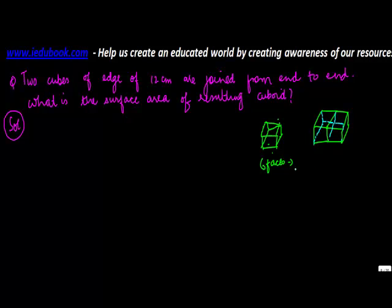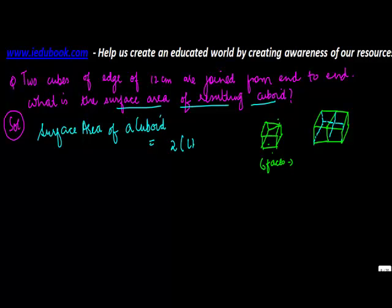So now the surface area of the resulting cuboid. Surface area of a cuboid is given by the formula 2(LB + BH + HL). You need to know basically the length, the breadth, and the height of the cuboid.